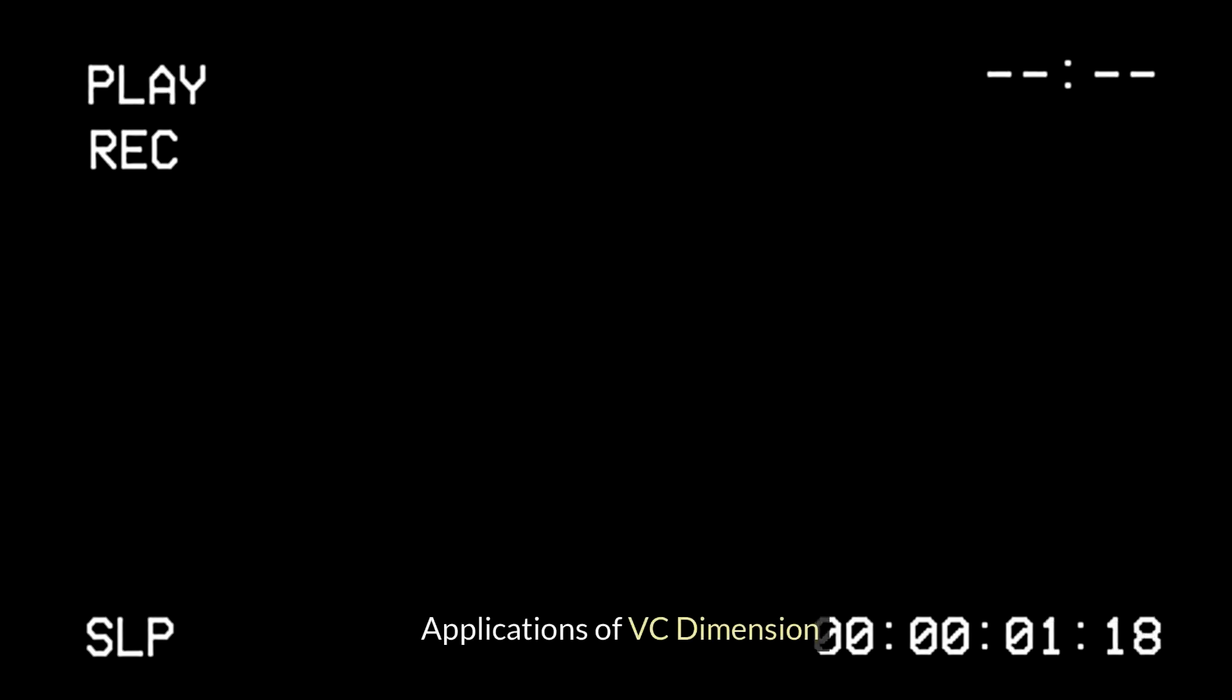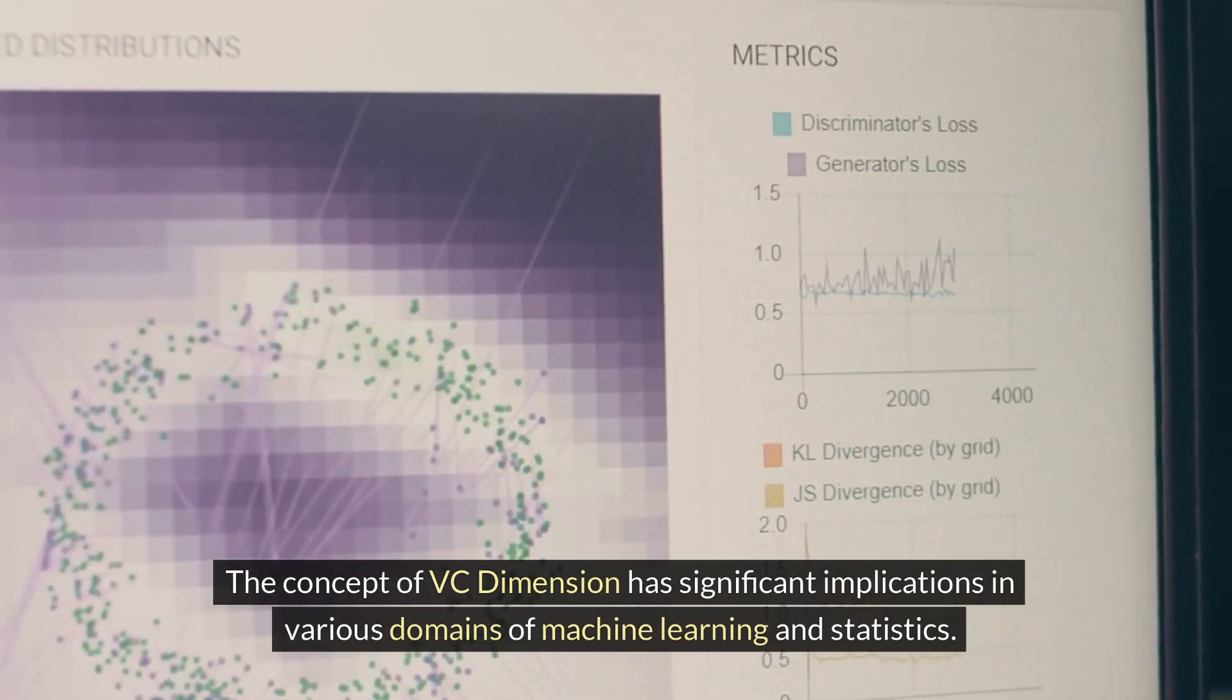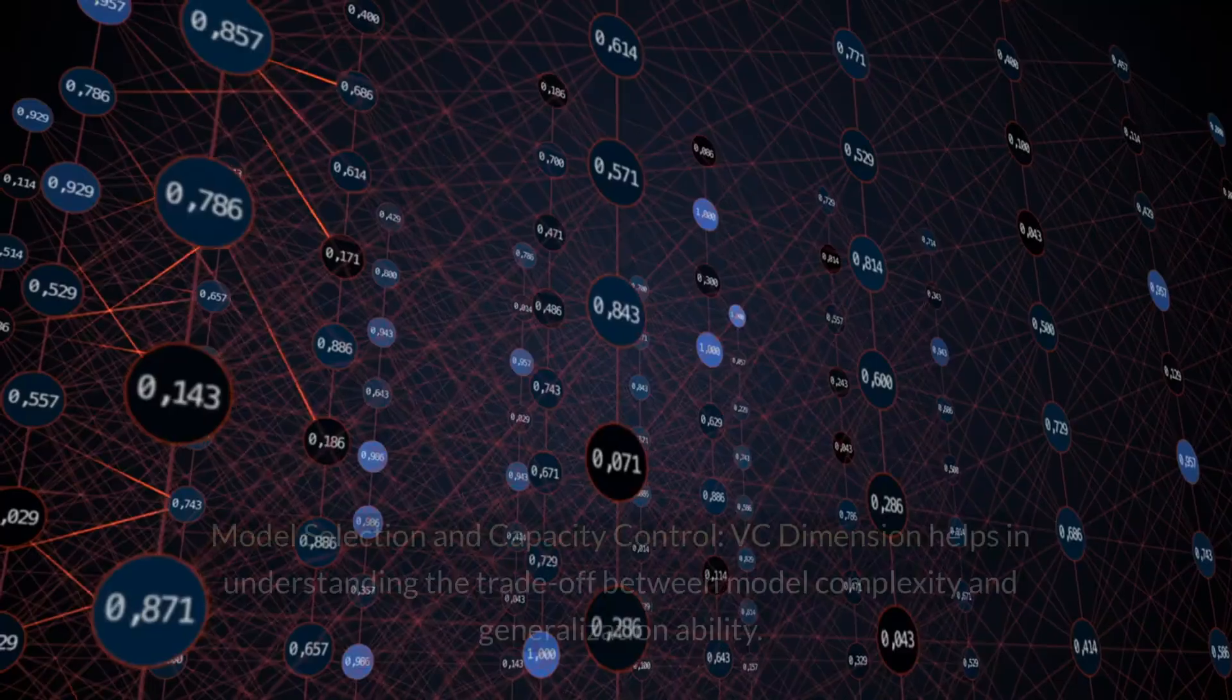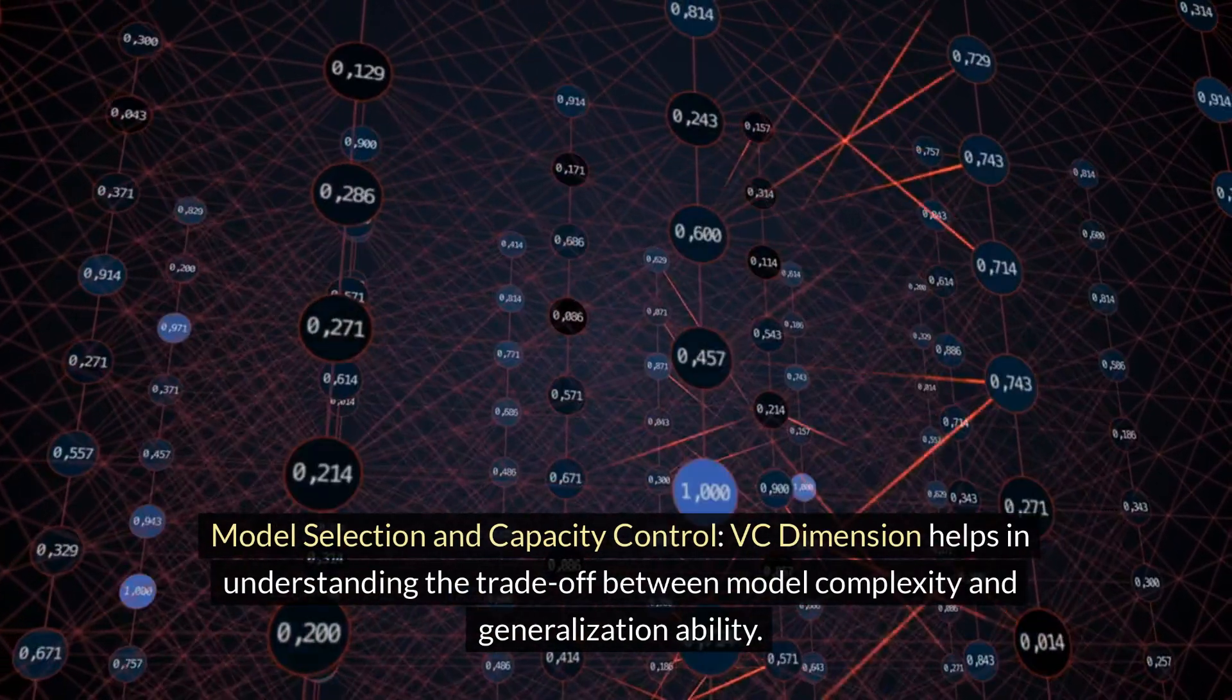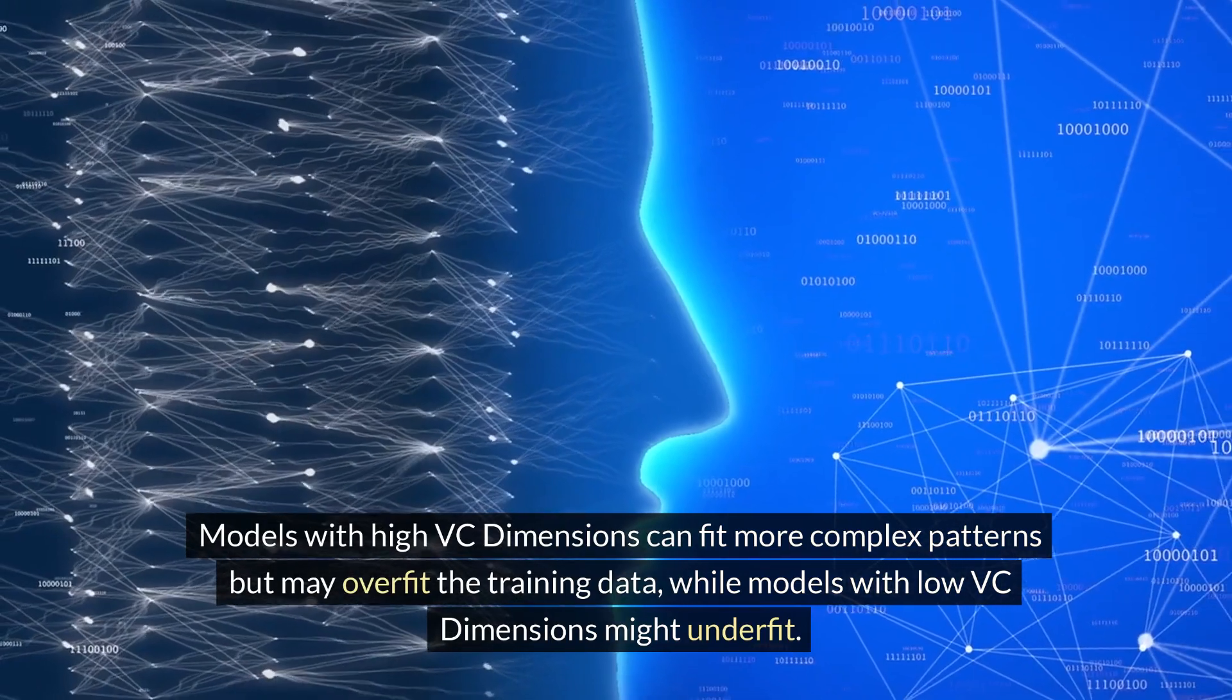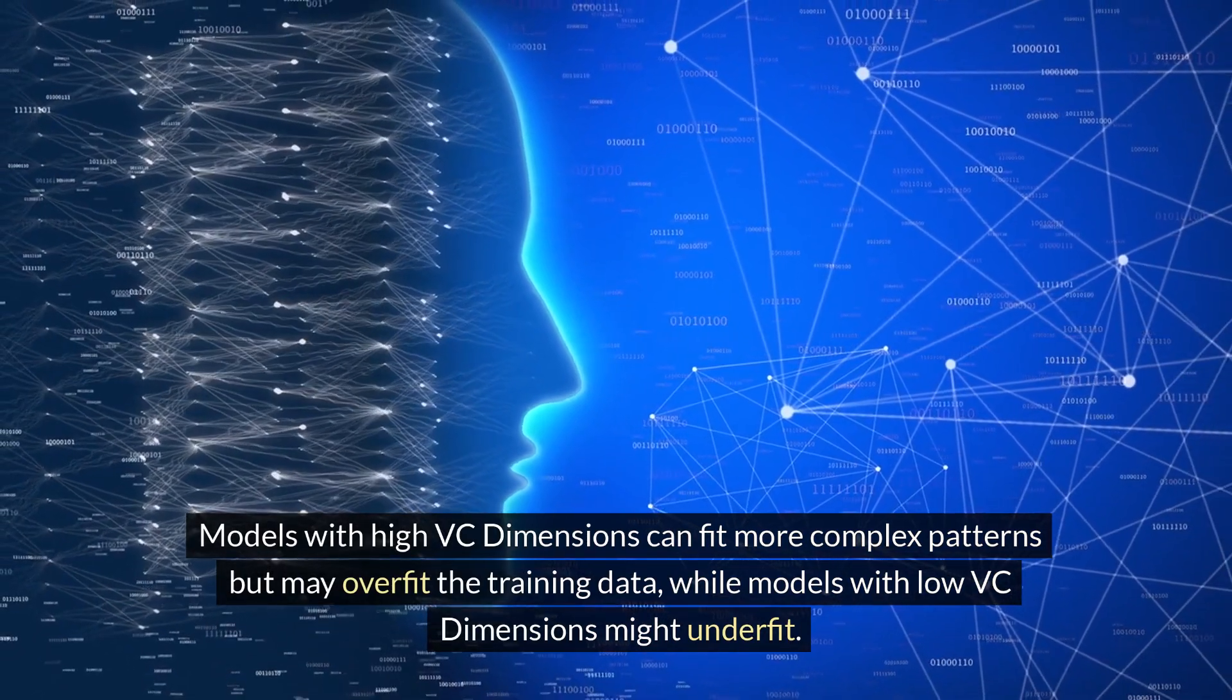Applications of VC Dimension. The concept of VC dimension has significant implications in various domains of machine learning and statistics. Here are some key applications. Model Selection and Capacity Control. VC Dimension helps in understanding the trade-off between model complexity and generalization ability. Models with high VC dimensions can fit more complex patterns but may overfit the training data, while models with low VC dimensions might underfit.